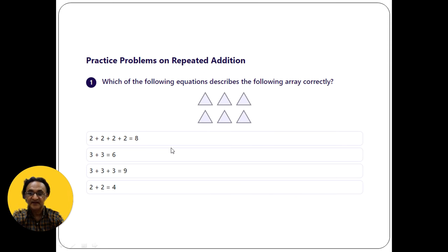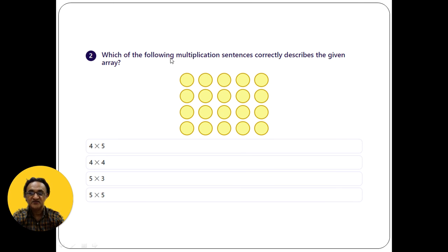Which of the following multiplication sentences correctly describes the given array? There's a sequence or arrangement you have to analyze. Here's another question.